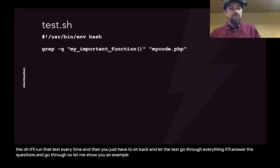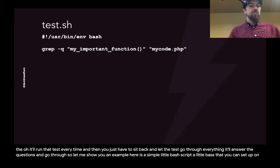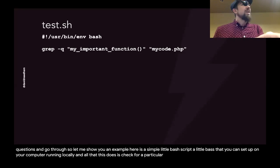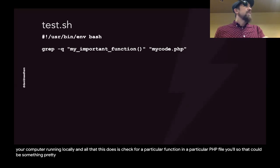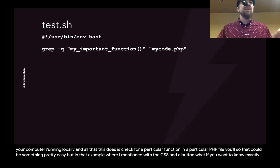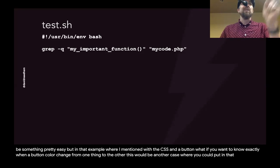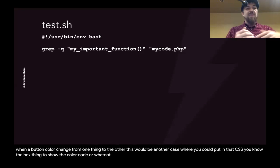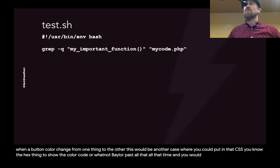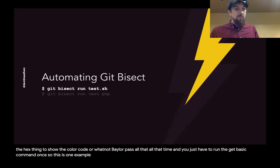Here is a simple bash script you can set up on your computer running locally. All it does is check for a particular function in a particular PHP file. In the example with CSS on a button — if you wanted to know exactly when a button color changed from one thing to another — you could put in the CSS hex color code, and it would return fail or pass each time. You just have to run the git bisect command once.